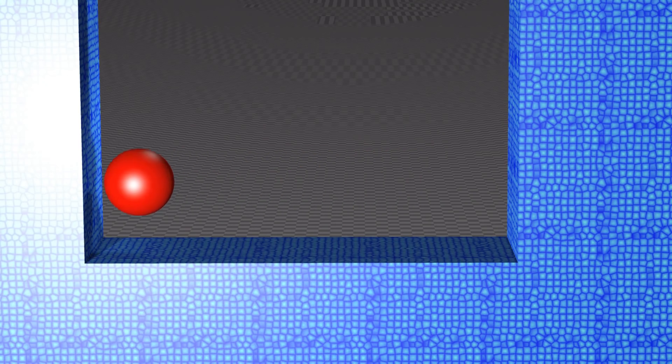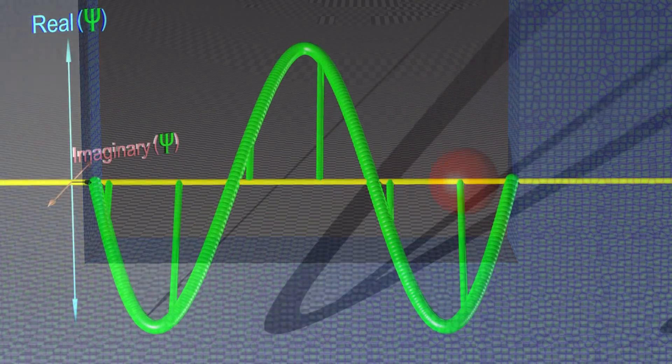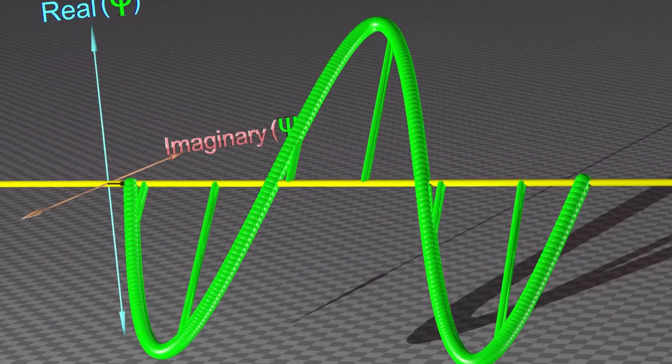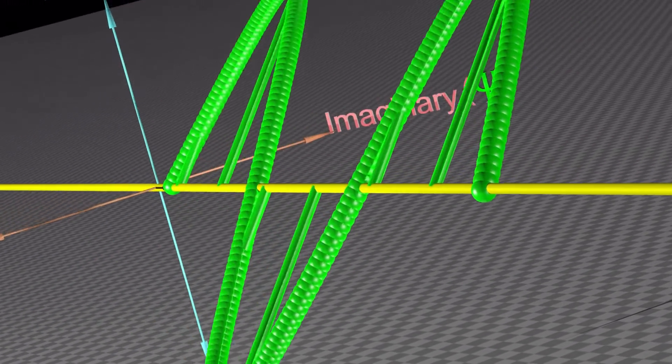On the other hand, if we have a quantum particle trapped inside a box, its wave function may look as shown. Why do the wave functions look so different in the two cases?